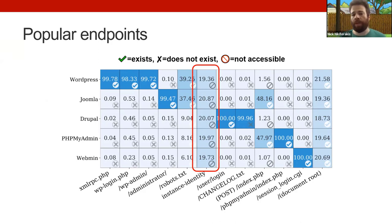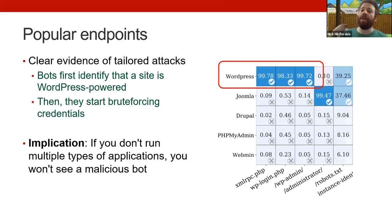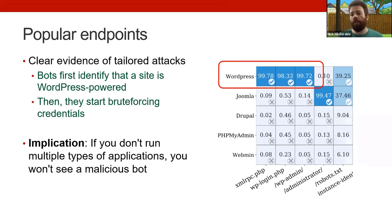We see a server-side request forgery attack that bots are trying based on specifics of the Amazon Web Services cloud. Looking at tailored attack behavior, WordPress sites get the most hits for WordPress endpoints — it's not that someone is asking for WP admin from every site on the internet; they first figure out that you're a WordPress site, then start attacking. The implication: if you don't run multiple types of applications in your honey site setup, you will have blind spots and miss traffic from bots targeting the applications you're not running.